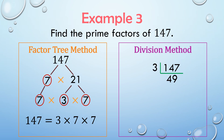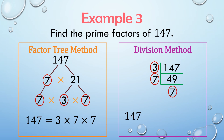So 147 divided by 3 is 49. Now we divide 49 by 7. So 49 divided by 7 is 7. Now they are all prime numbers. Therefore, the prime factors of 147 are 3 times 7 times 7. Again, we have arrived at the same answer.